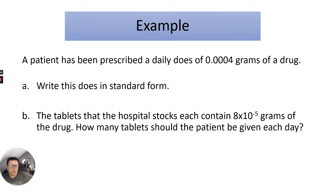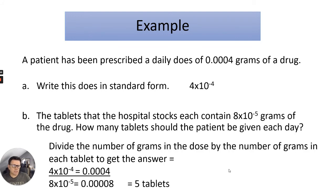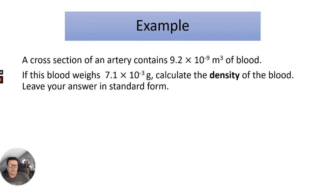Here are a few more questions for you. I'd like you to pause it and have a go at these questions. Right, so the answers. Write this down in standard form: 0.0004, so 1 2 3 4, it's 4 times 10 to the minus 4. The tablets that the hospital stocks contain 8 times 10 to the minus 5 grams of the drug. How many tablets should the patient be given each day? You've got to divide the number of grams in the dose by the number of grams in each tablet. It's literally 4.4 times 10 to the minus 4 divided by 8 times 10 to the minus 5, and that gives you 5 tablets.